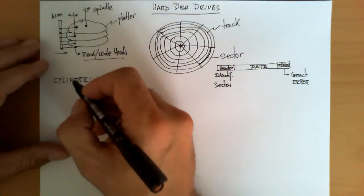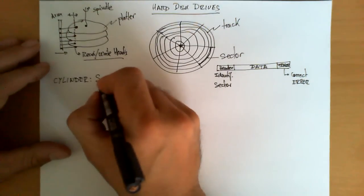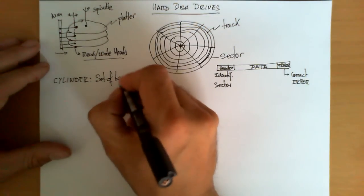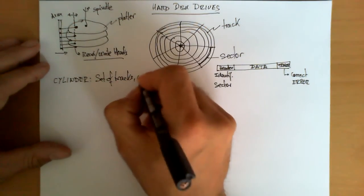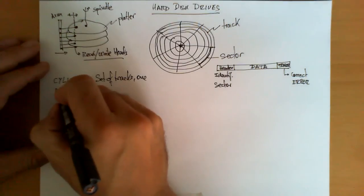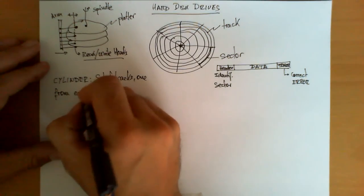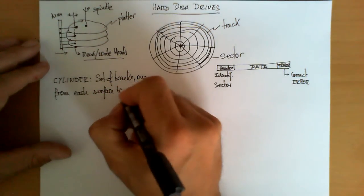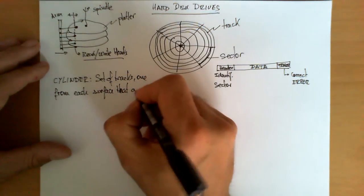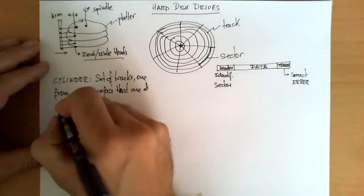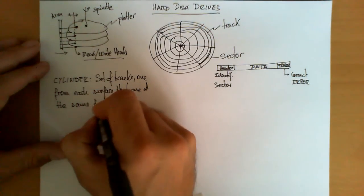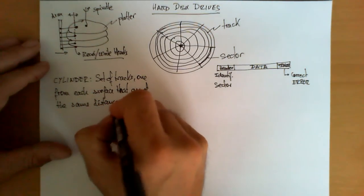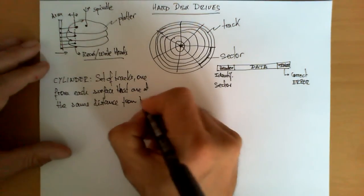cylinder is known as the set of tracks, one from each platter, or I should say each surface, that are at the same distance from the spindle.